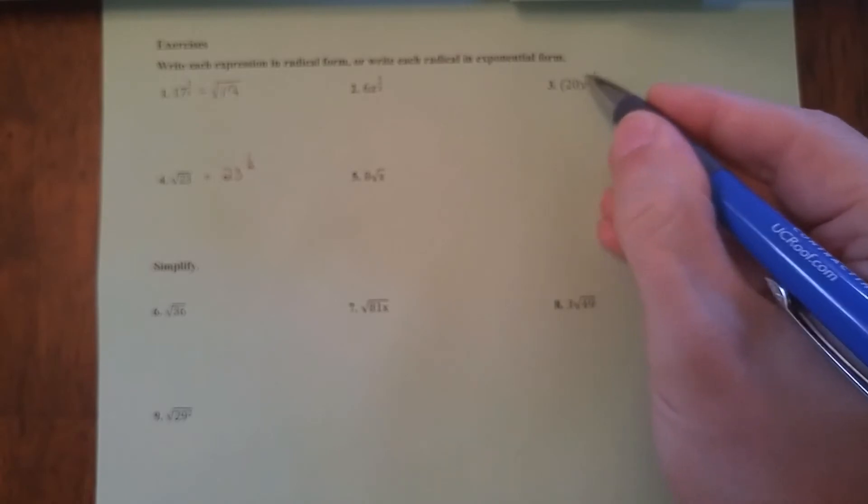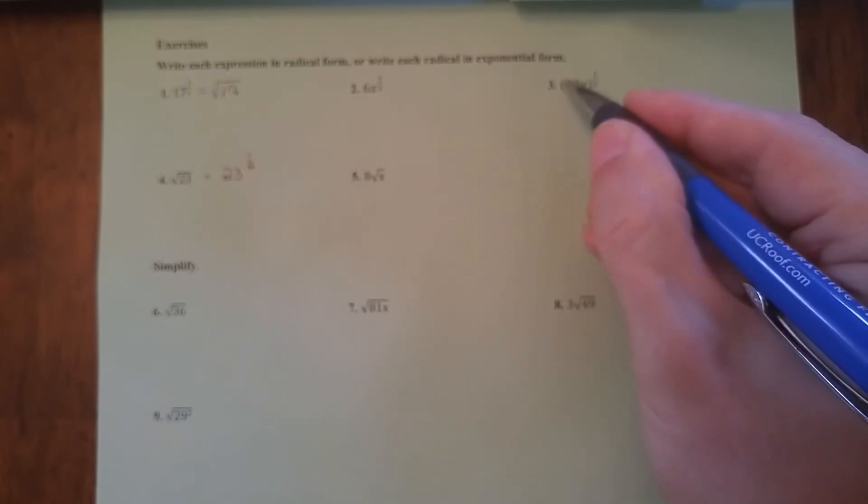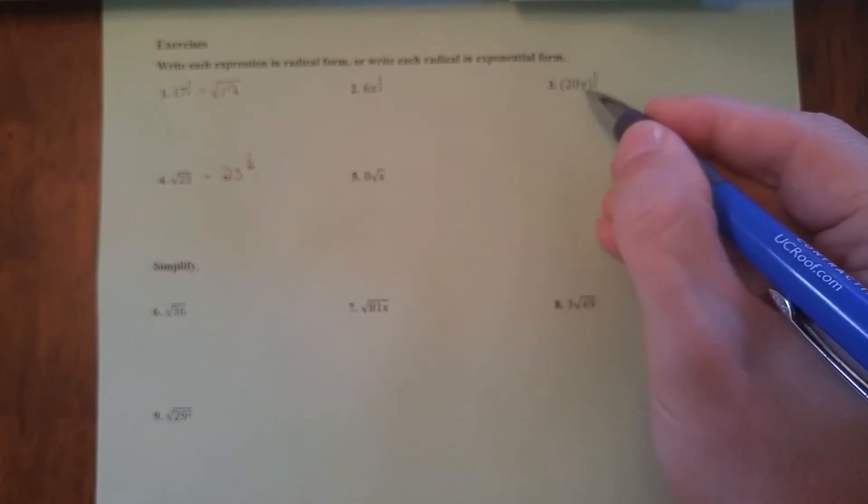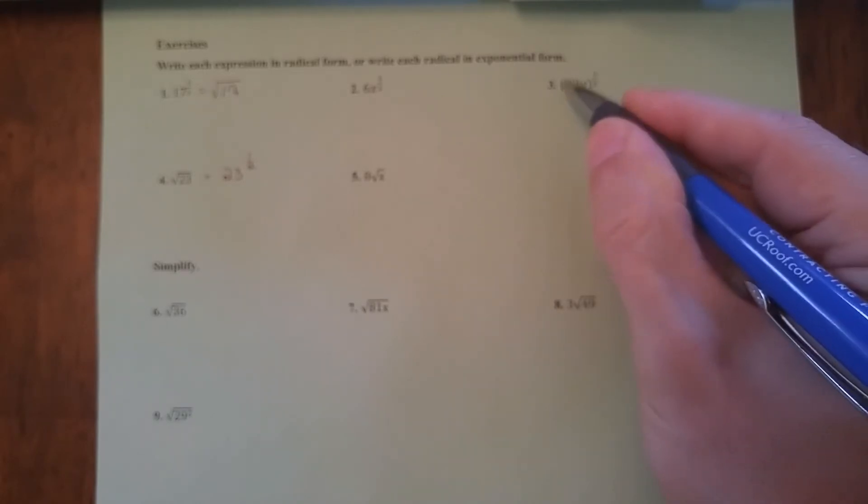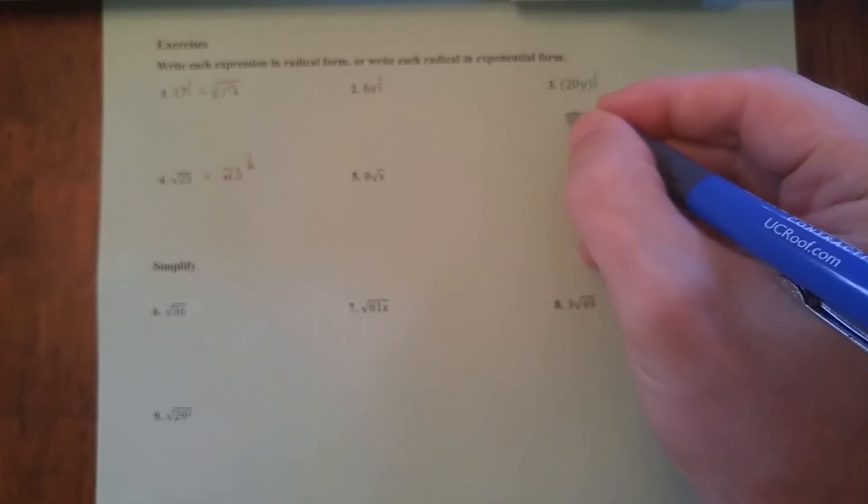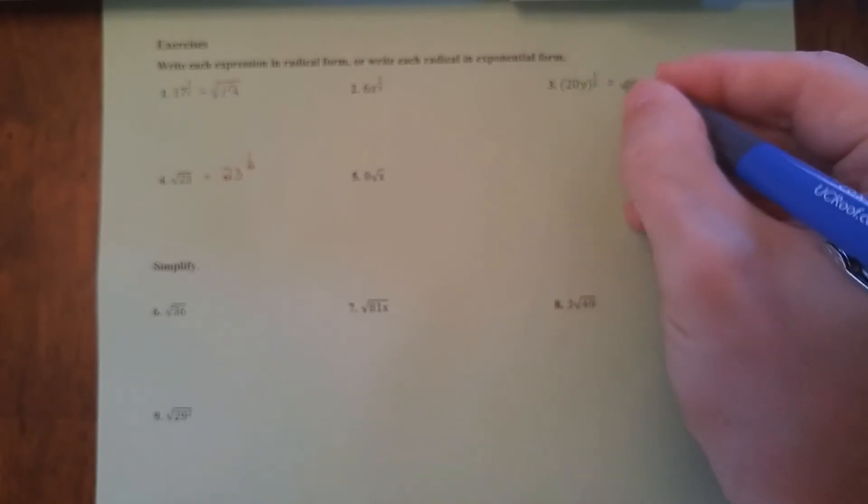Now right here, see how this whole entire thing, the 20y, is to the one-half power? And we know that because it's all grouped together in parentheses and there's a one-half exponent on the whole group. So what that means is this is going to be square root 20y.